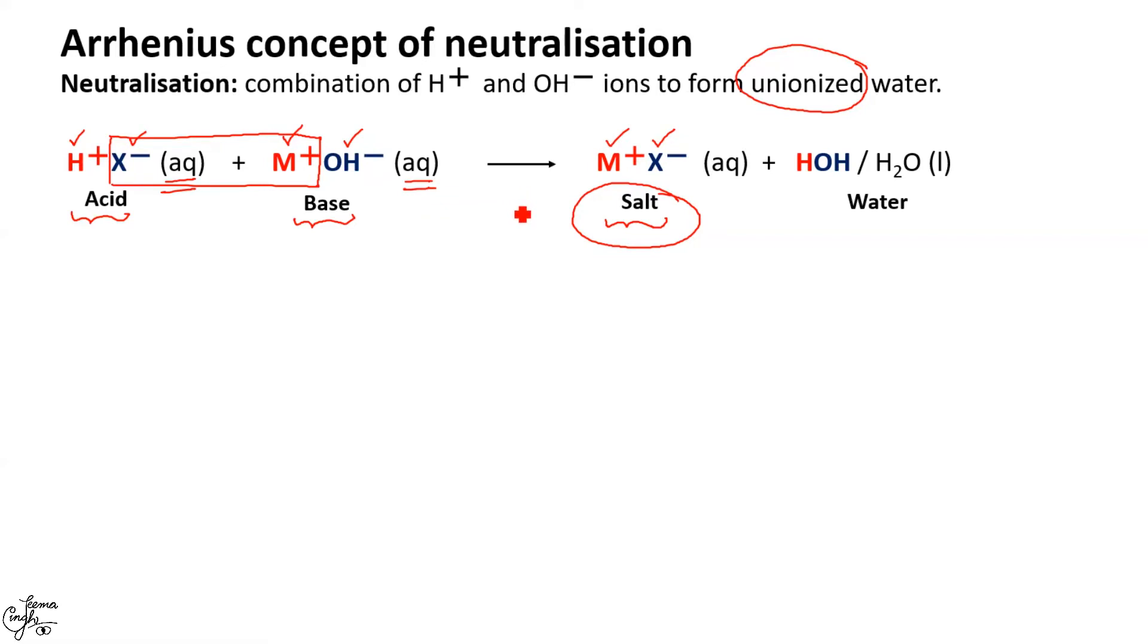Whereas, in case of water that is formed in product, this H positive ions given by an acid combines with OH negative ions produced by base to give rise to HOH. See that I did not put any charge on H and OH. This is unionized water. It doesn't contain ion. Or you can write it as H2O. Now how H and OH are bonded to each other, you are going to study later.